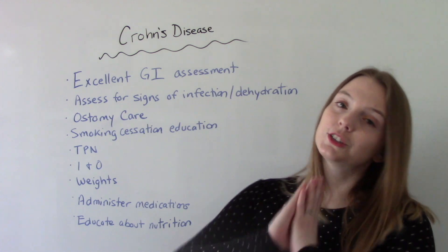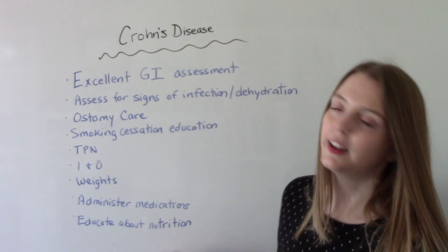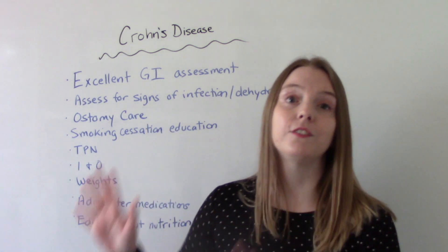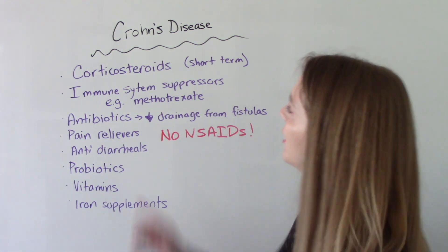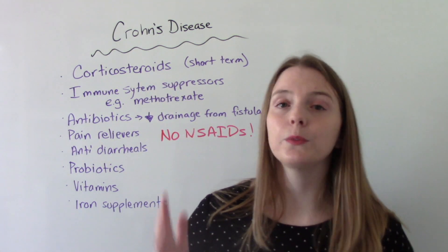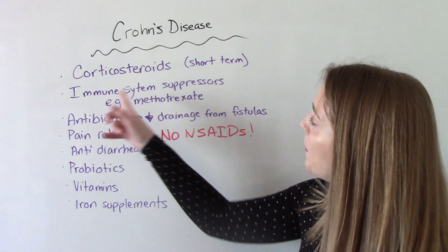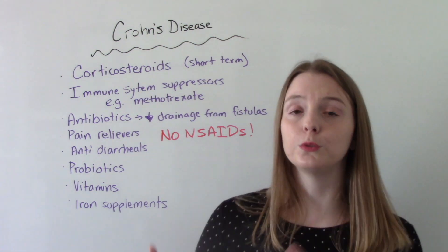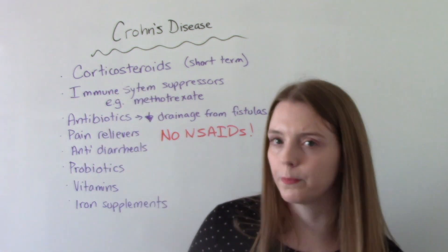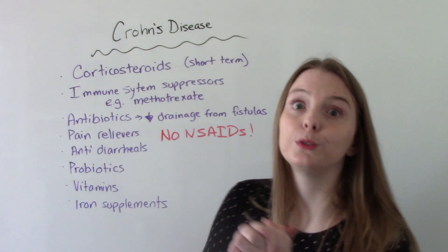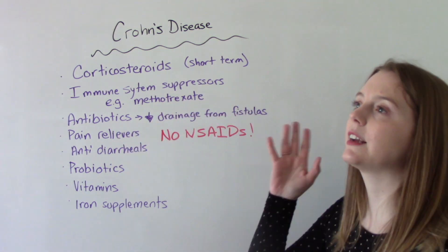There are two big treatments for Crohn's disease that are often used together: medication therapy and nutrition therapy. For medications, first are corticosteroids — ideally short-term use — which work by reducing inflammation. Then there are immune system suppressors, which also reduce inflammation but do so by working on the immune system systemically, whereas corticosteroids are a little more local. These two are frequently given at the same time. A common example of an immune system suppressor is Methotrexate.